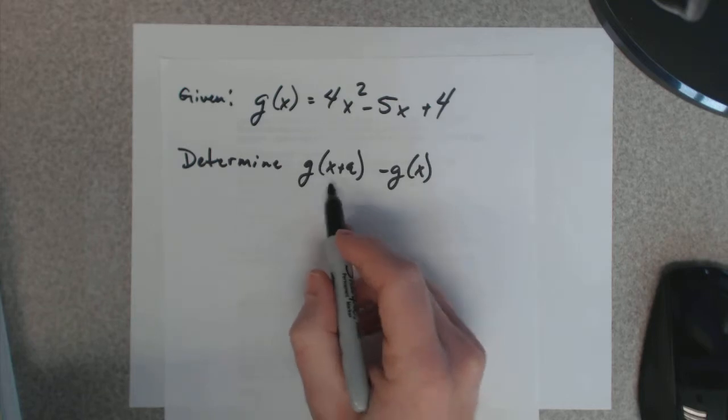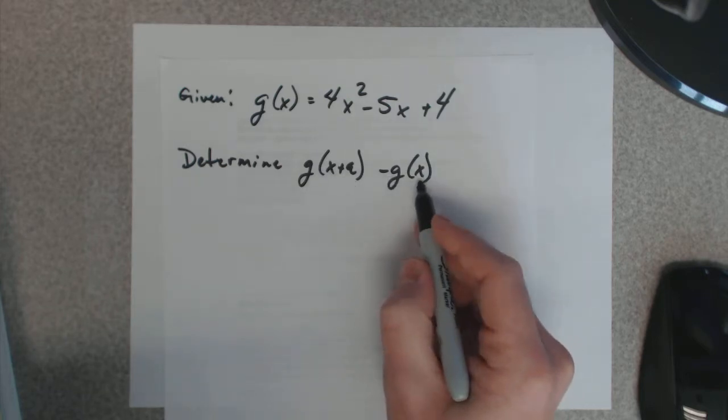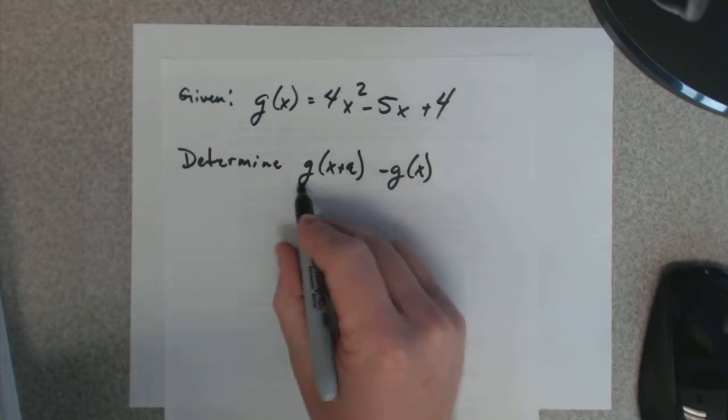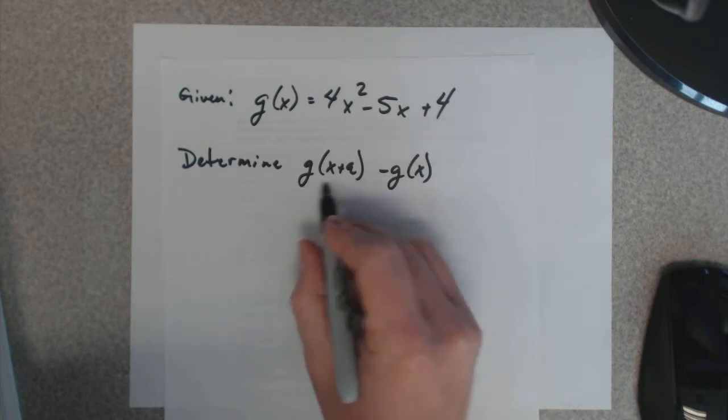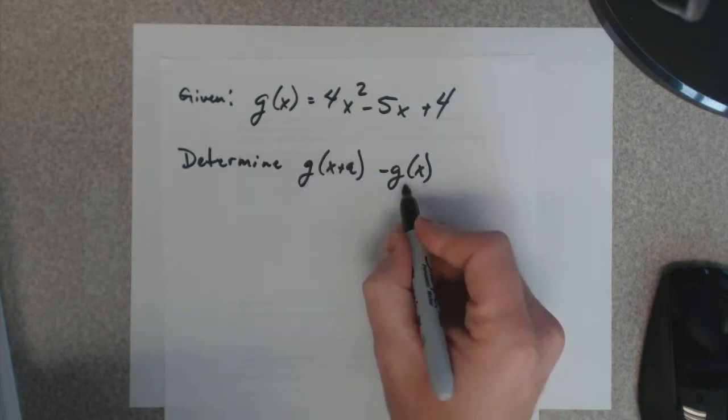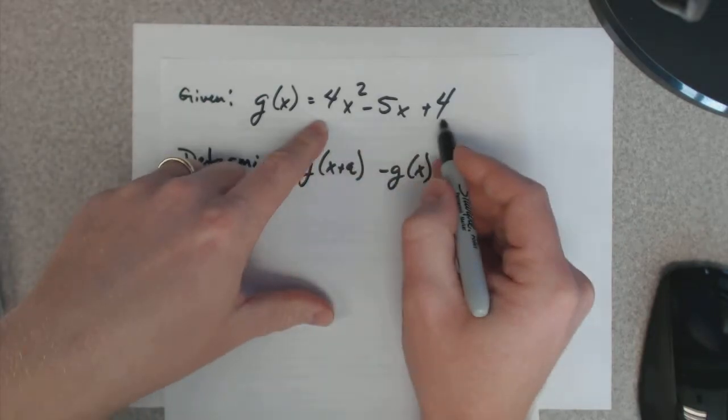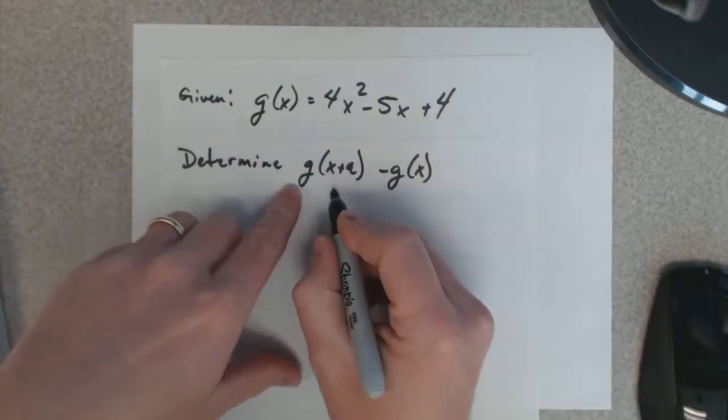We're trying to find g of x plus a minus g of x. So first off, I need to find g of x plus a. Once I do that, I'll replace it. I already know what g of x is. This is g of x. So, this is the main thing to worry about.